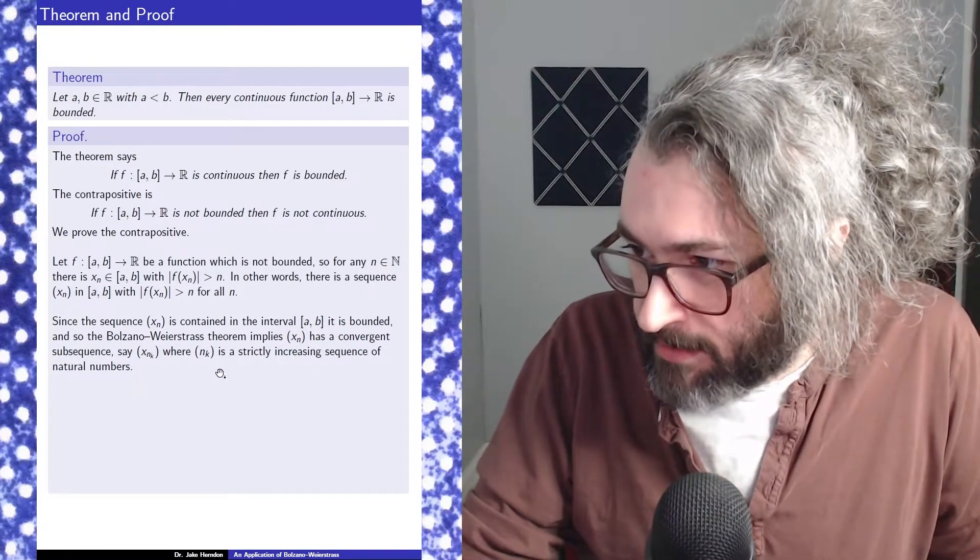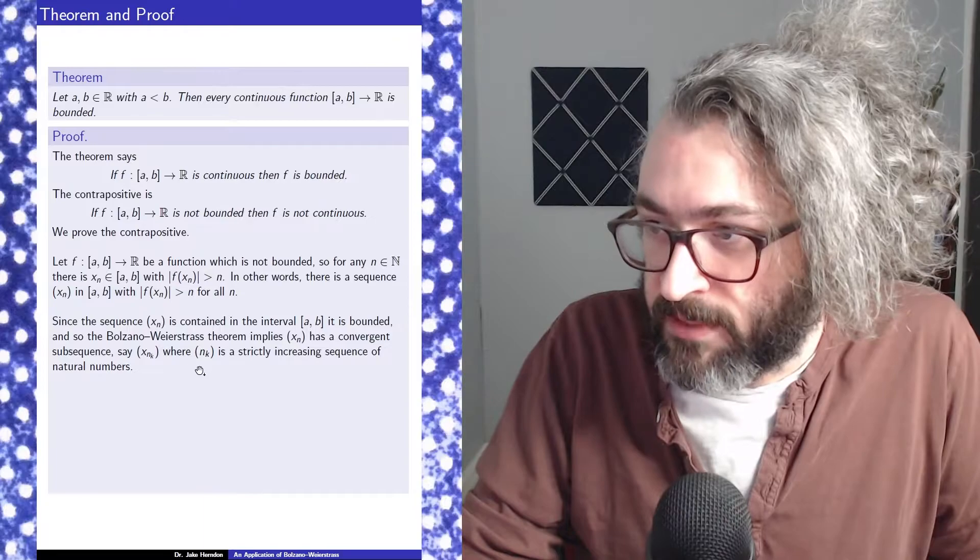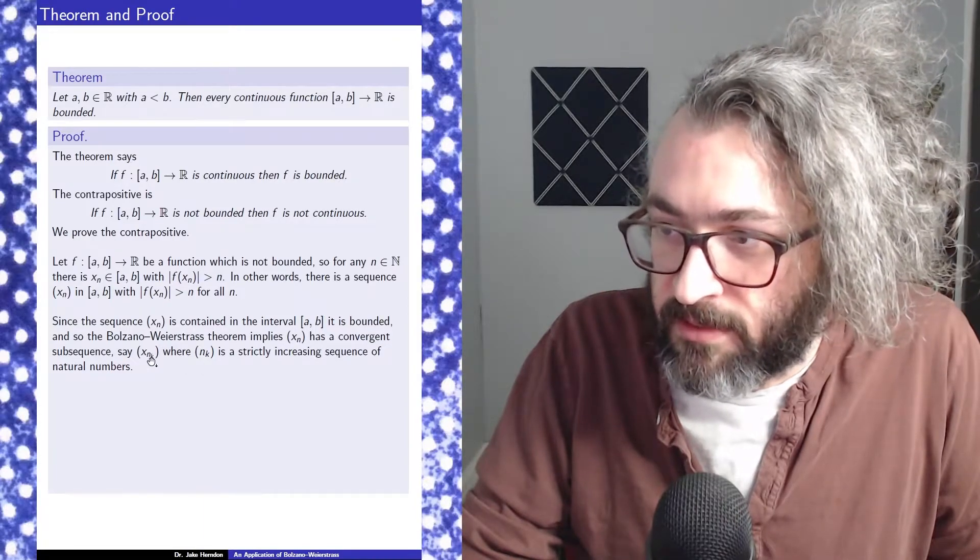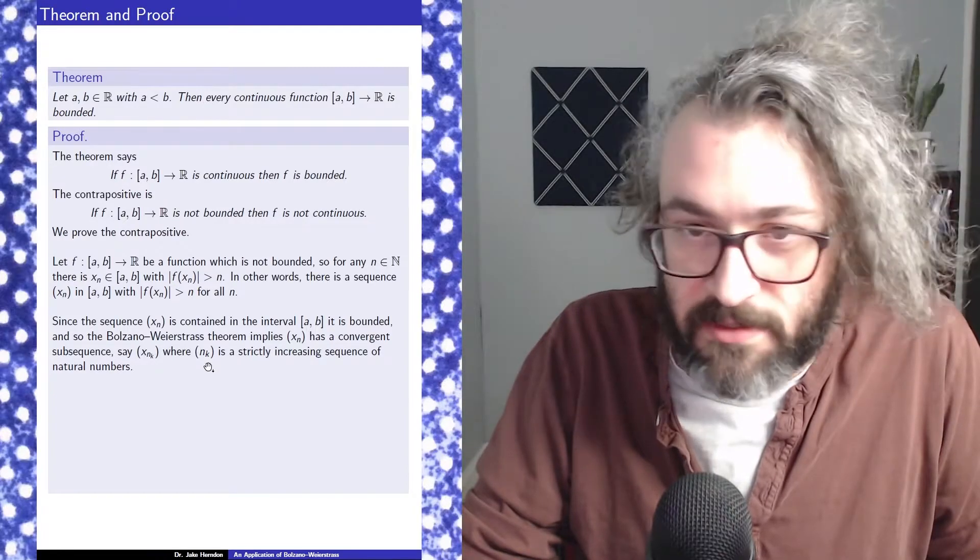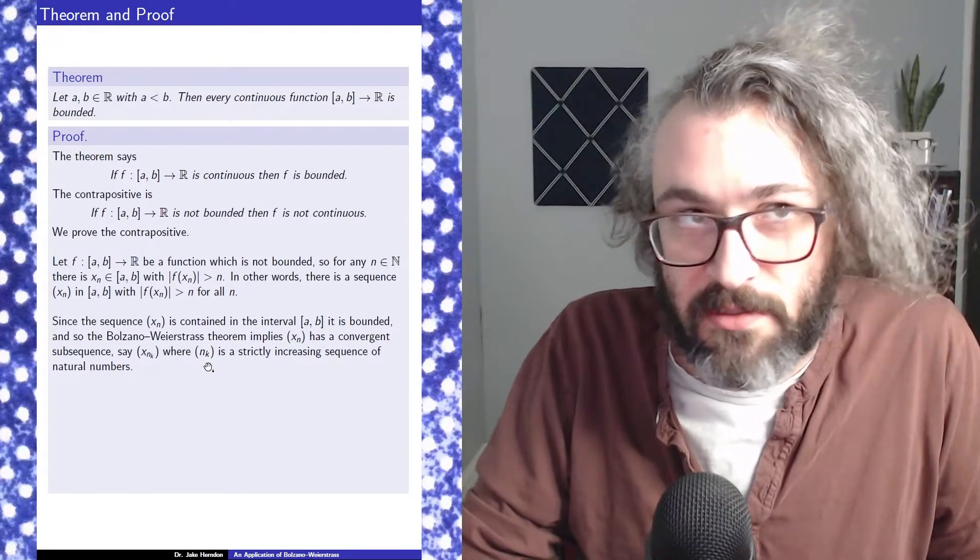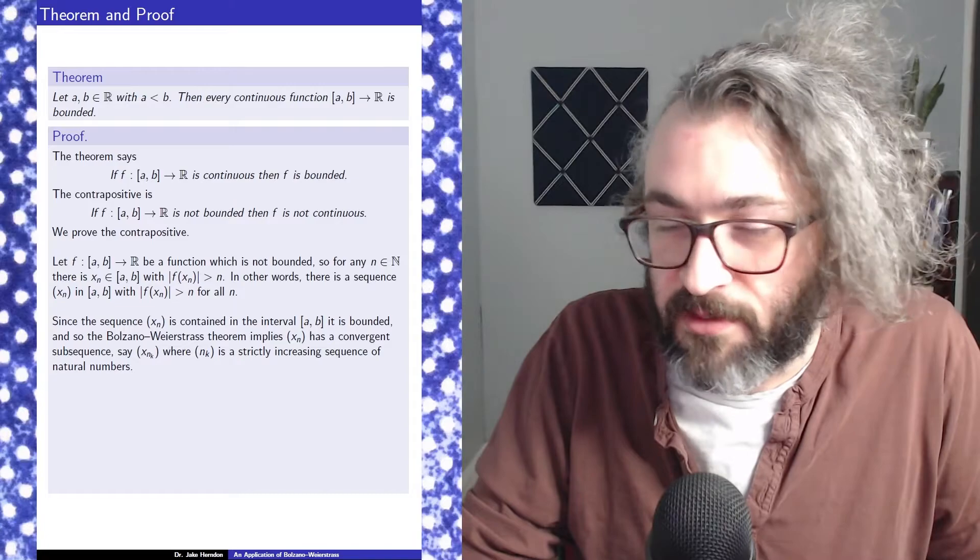To say that you've got a subsequence means you're skipping some of the indices. So that's what this sequence is doing. A strictly increasing sequence of natural numbers is just going to skip some terms of the original sequence.